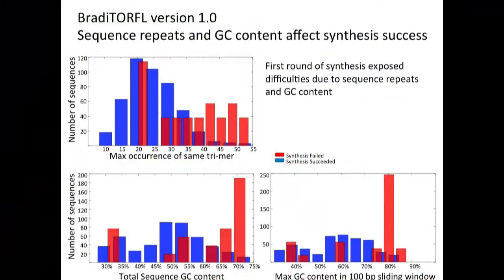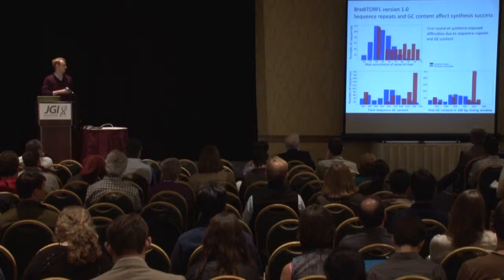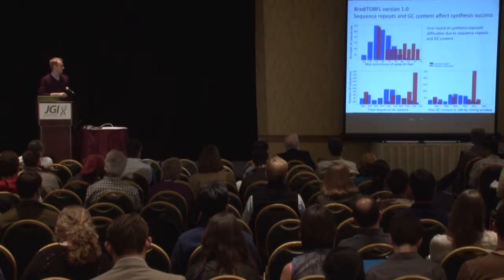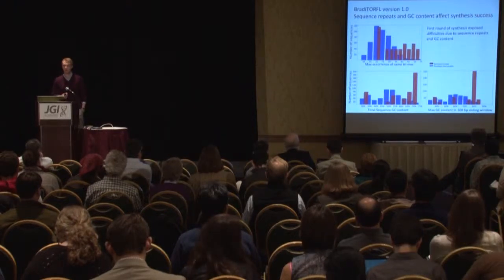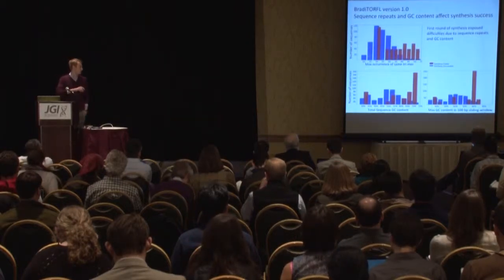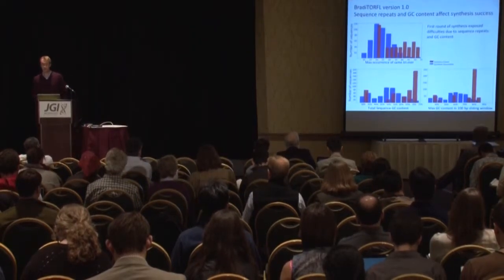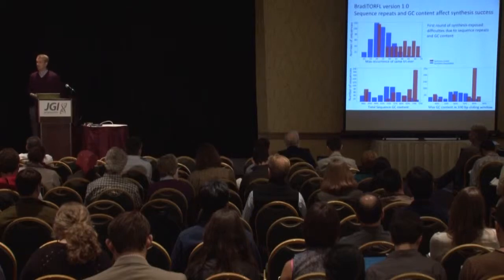As we went forward with the first round of synthesis of this library, we learned a lot about the difficulties of synthesizing genes from Brachypodium. In these figures we have representations of the three major problems: small sequence repeats — the max occurrence of the same trimer in the ORF — total sequence GC content, and the localized maximum GC content in any 100 base pair sliding window. The blue bars denote successful synthesis, whereas the red shows sequences we weren't able to capture the first time around.